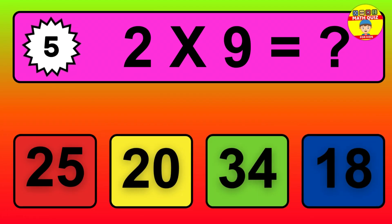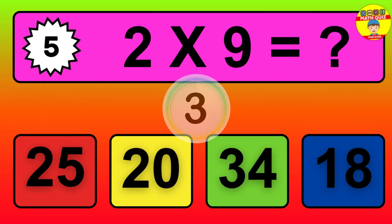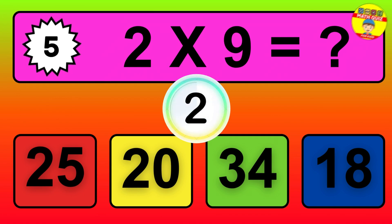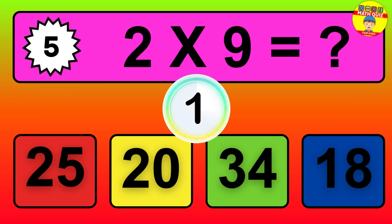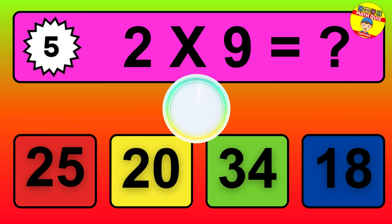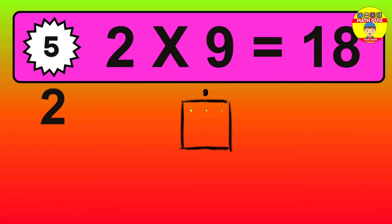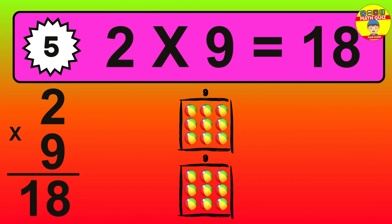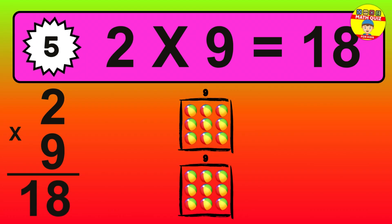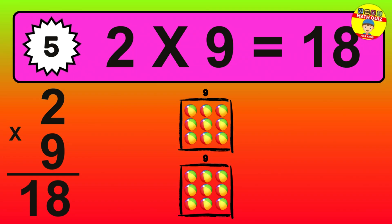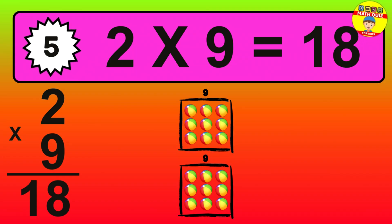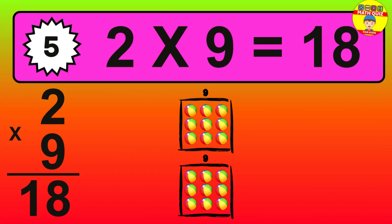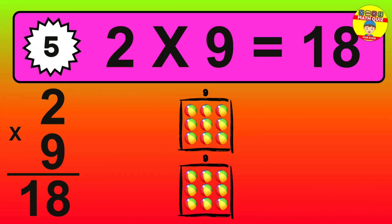Question 5. 2 times 9 equals what? The answer is 2 times 9 is 18. To calculate, we have 2 groups with 9 balls each one. So, how many balls do we have? 18 balls.